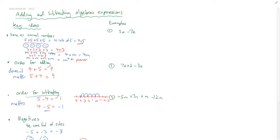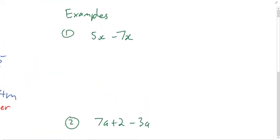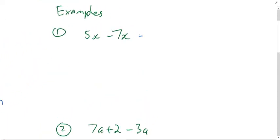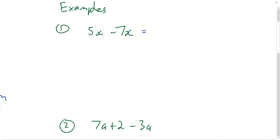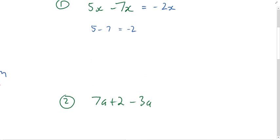Here are some examples. If I've got five x's and I take away seven x's, just like five take away seven equals minus two, I end up with negative two x.